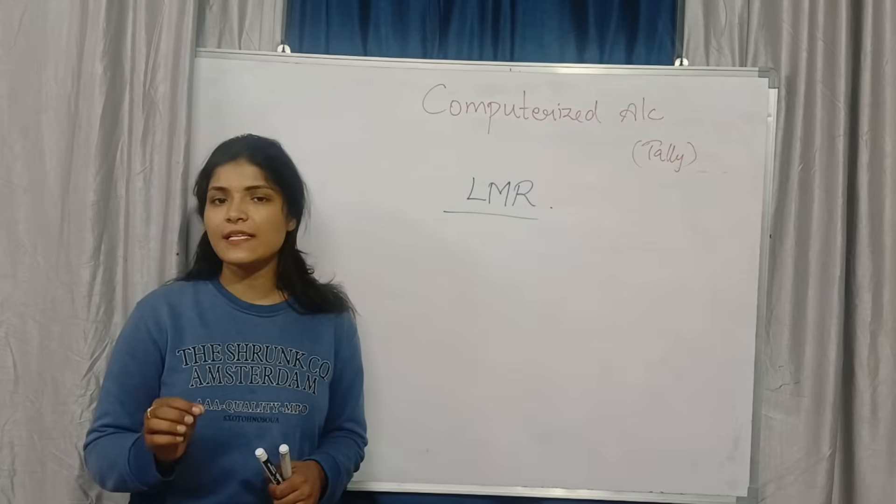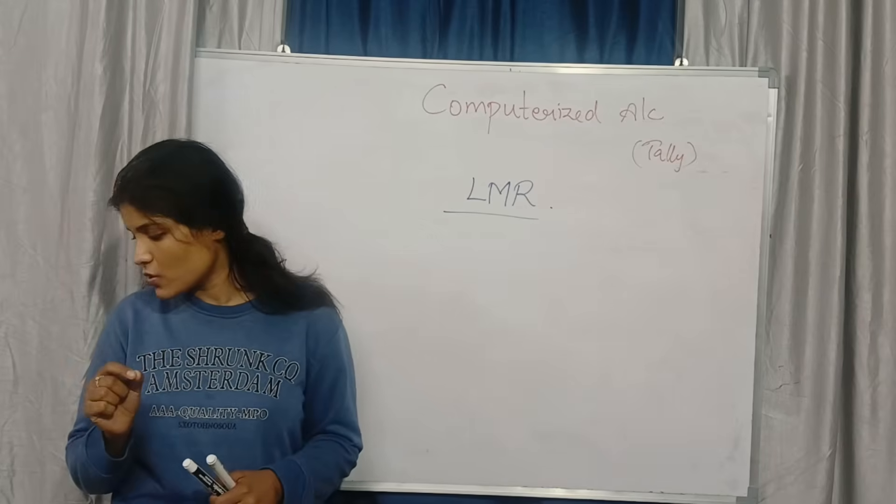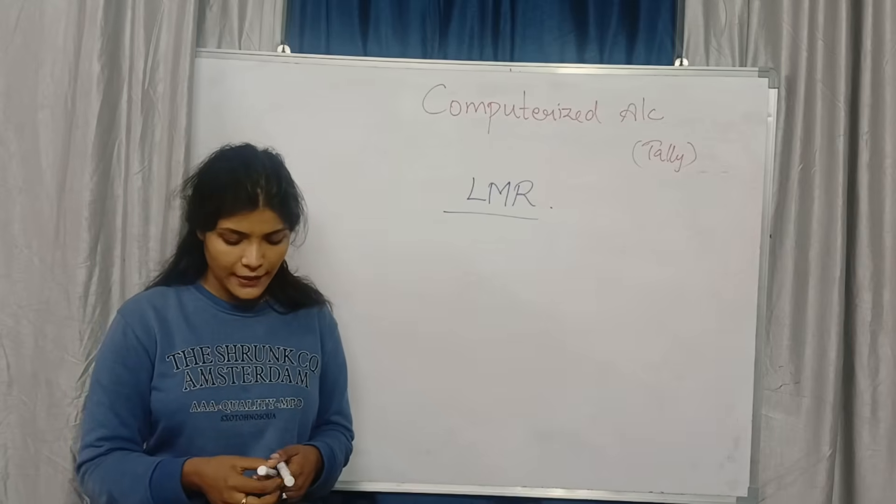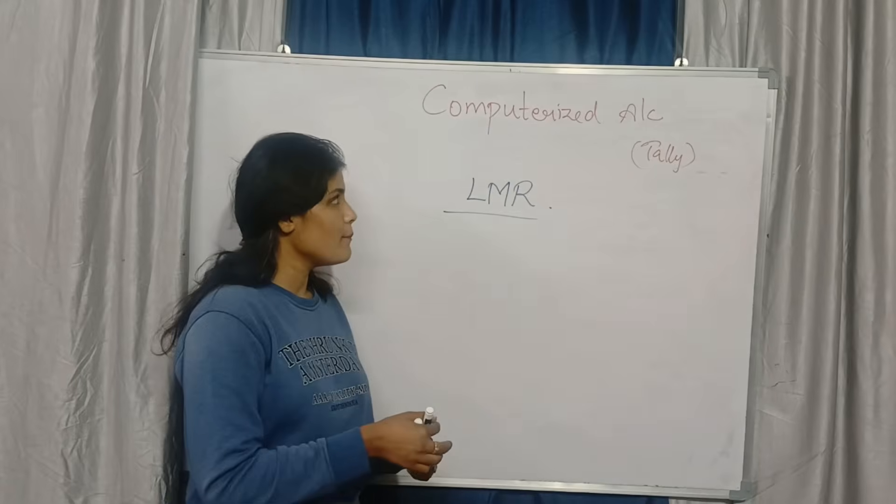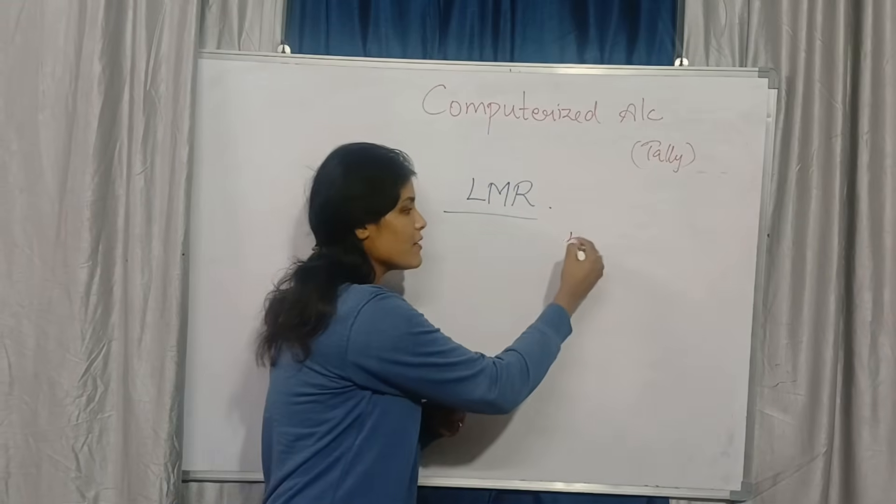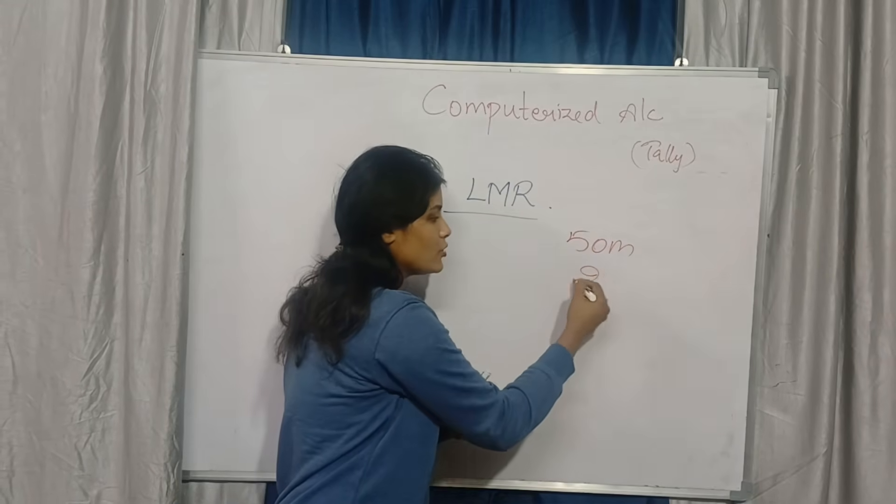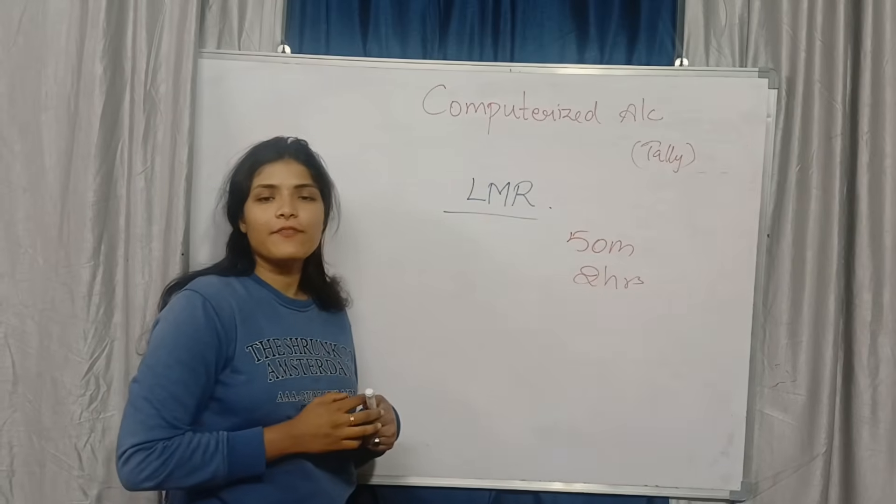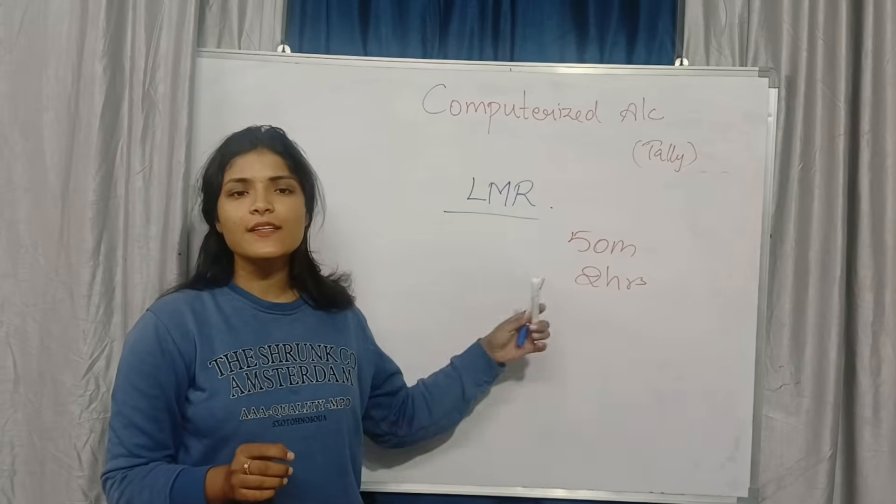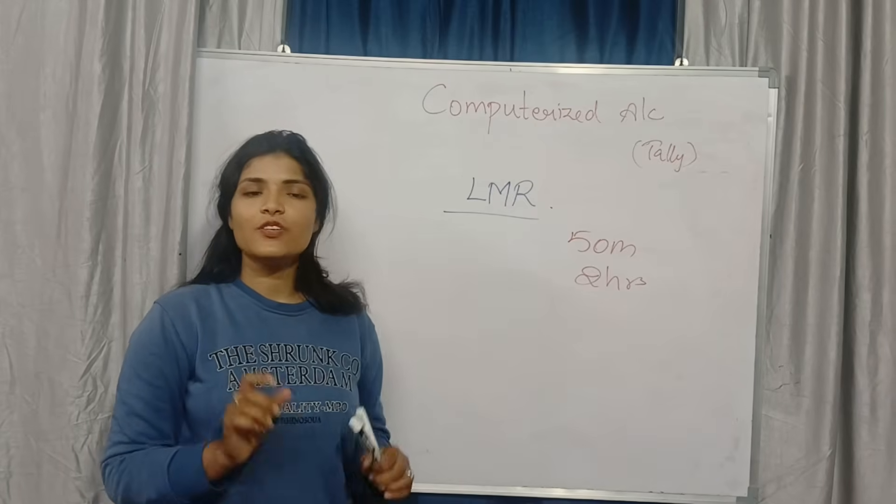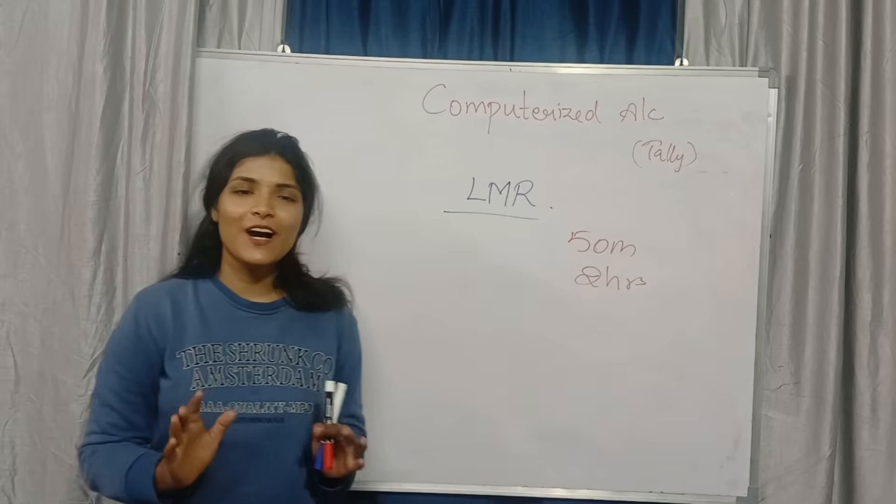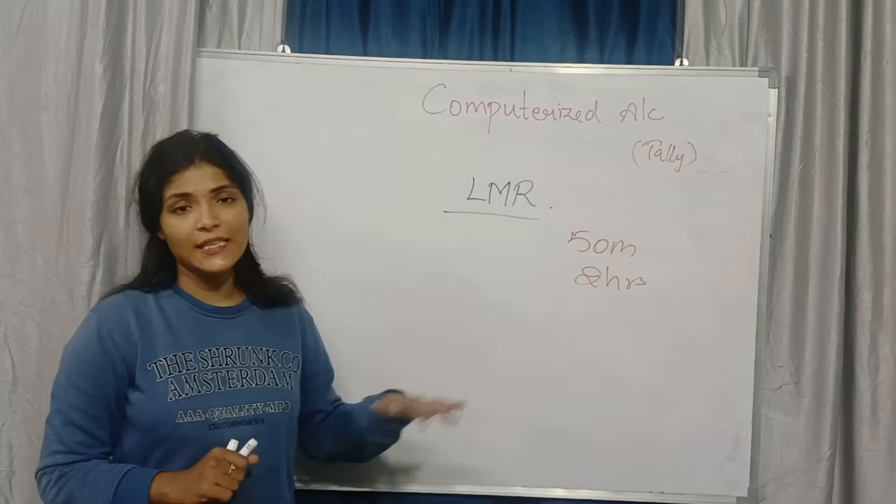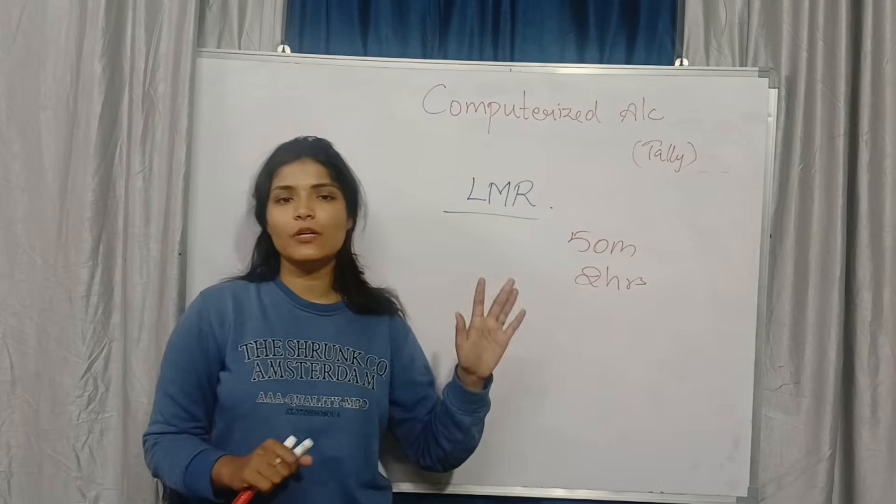Computerized Accounting is a basic subject, so no need to worry about anything. In this video, I will give you complete clarification regarding that. So basically, Computerized Accounting is a 50 marks paper with 2 hours time duration. In this Computerized Accounting, every student is getting a dilemma that this is a problematic subject. I want to give you clarity that Computerized Accounting is not at all a problematic subject. It is a theory subject.